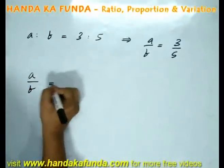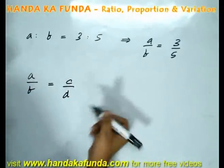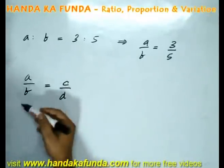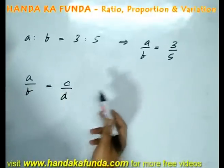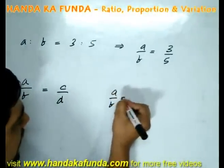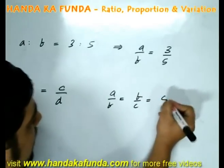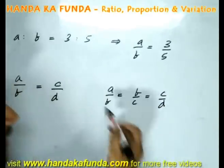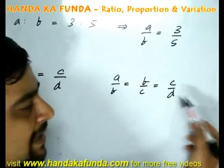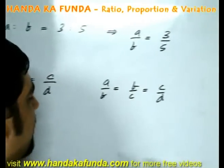If A by B is equal to C by D, then it is said that A, B are in the same ratio as C and D, or A, B, C, D are said to be proportional to each other. However, if A by B is equal to B by C is equal to C by D, then they are said to be in a continued proportion. If you realize, that means A, B, C and D are in a geometric progression as well.